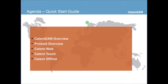For the Quick Start Guide, we're going to go over Calum EAM and introduce who we are, and the product function overview, the clients for the web and for mobile devices, and also the offline client.